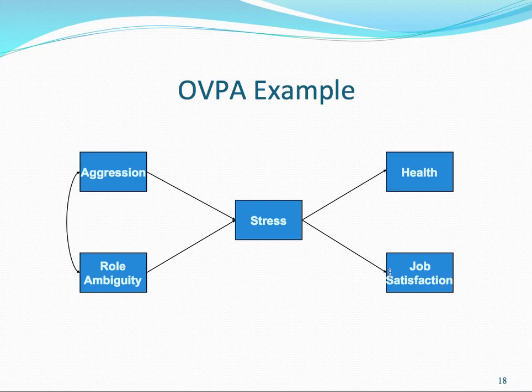We still have the one-headed arrow. Because we are running our structural models, we're specifying a direction—stress predicting health and job satisfaction. And we have the bidirectional arrow indicating the correlation between aggression and role ambiguity.